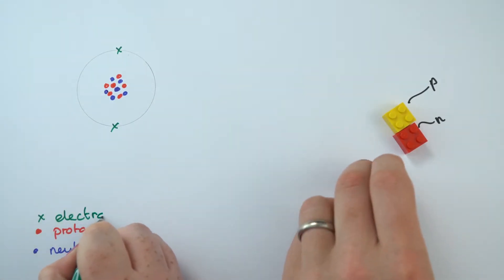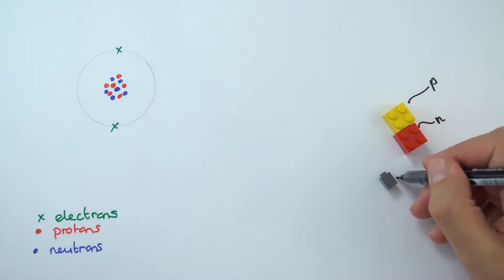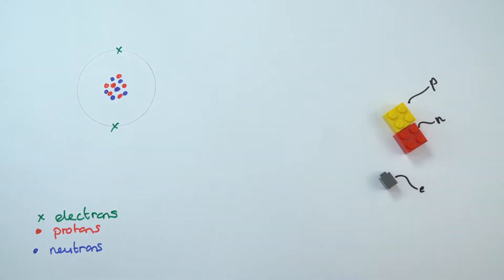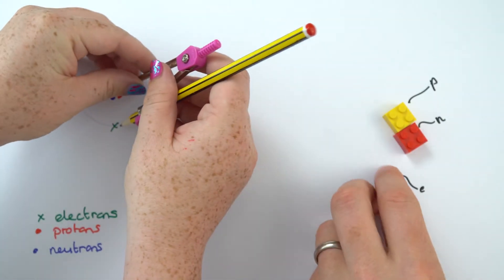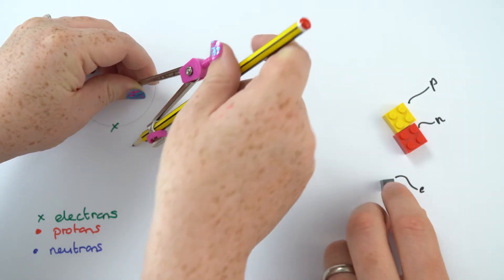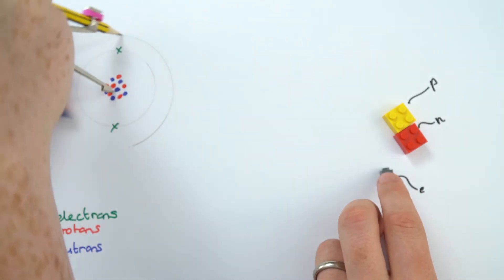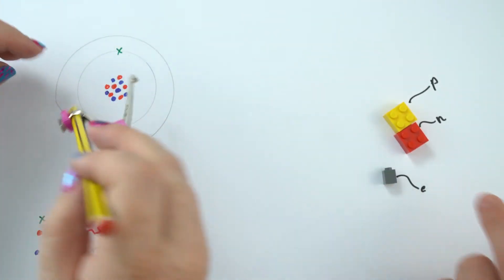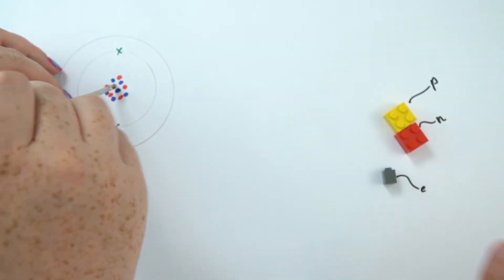And for my videos what I'm using are the smaller grey things to be my electrons. Again, they don't really have this color, they're not really made out of Lego. But this is just a way that I can model the world around us. So in the next few videos I'm going to be using a lot of Lego to explain the atomic model and the nuclear model of the atom.